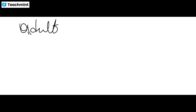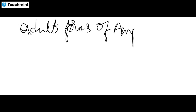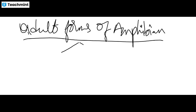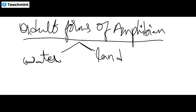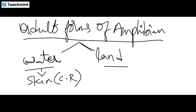In the larval forms of amphibians, gills are used for respiration. Adult forms of amphibians such as frogs may live in water and on land. In the water, adult amphibians respire through skin — this is called cutaneous respiration. If they respire through skin, we call it cutaneous respiration.